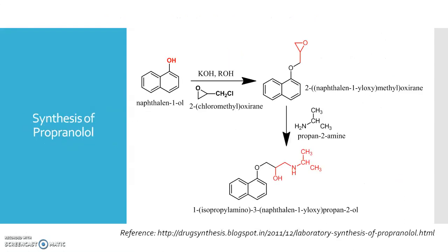To summarize, the role of KOH is to generate the naphtholate ion, which is a good nucleophile that will attack on the electron-deficient carbon of epichlorohydrin.